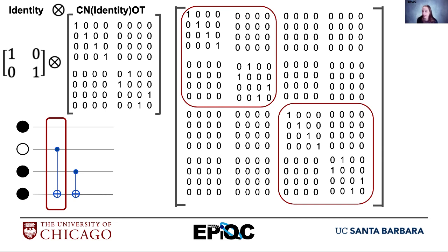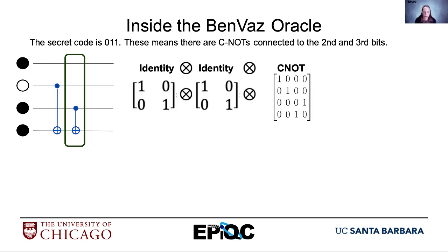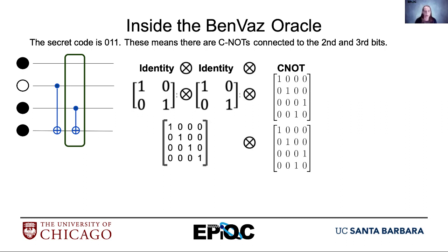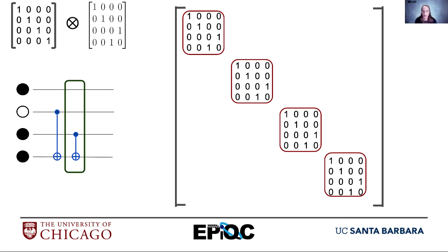The second CNOT is actually easier because the two identities are next to each other and the CNOT is on adjacent qubits. So we can just use identity ⊗ identity ⊗ CNOT. We have our identity matrices and the standard CNOT matrix. We can combine the identity matrices first — ones going down the diagonal — and then multiply out. The ones go down the diagonal, and we copy the right-hand matrix into each diagonal spot, filling the rest with zeros.